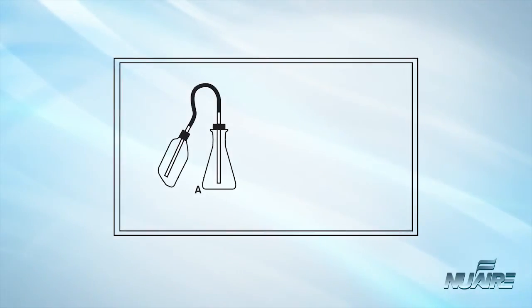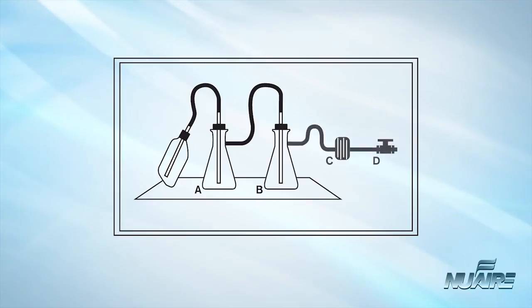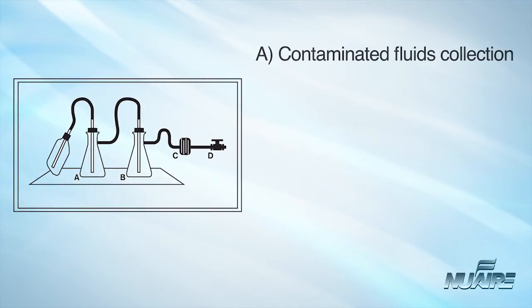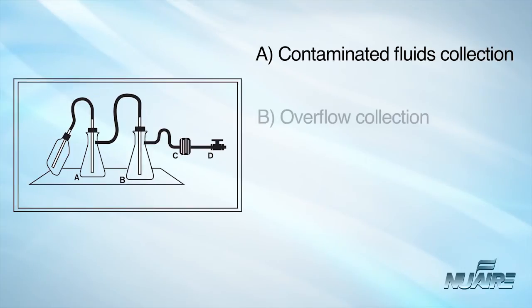Aspirator bottles or suction flasks should be connected to an overflow collection flask containing appropriate disinfectant and to an in-line HEPA or equivalent filter. The left suction flask, A, is used to collect the contaminated fluids into a suitable decontamination solution. The right flask, B, serves as a fluid overflow collection vessel.